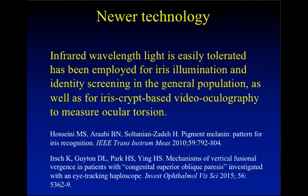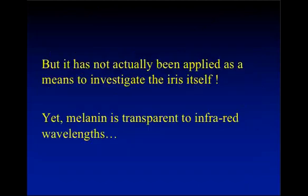With newer technology now available in most clinics, infrared wavelength light is easily accessible and well tolerated, employed for iris illumination and identity screening in the general population, as well as for iris crypt-based video oculography to measure ocular torsion. But it has not actually been applied as a means to investigate the iris itself. Yet melanin is transparent to infrared wavelengths, and so infrared would be ideal to see whether melanin is blocking the visibility of Brushfield spots or not.